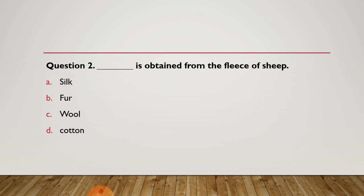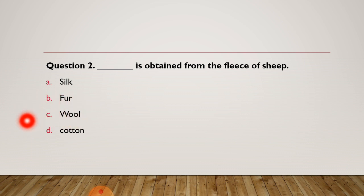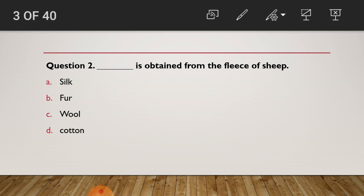Question 2: Dash is obtained from the flesh of sheep. Options: silk is obtained, fur is obtained, wool is obtained, or cotton is obtained. Have you chosen your answer? The right answer is wool. Wool is obtained from the flesh of sheep. Is that your right answer?